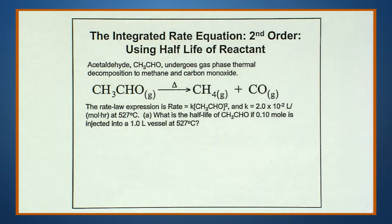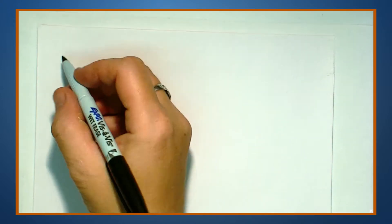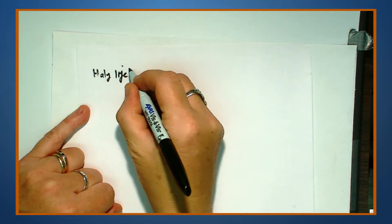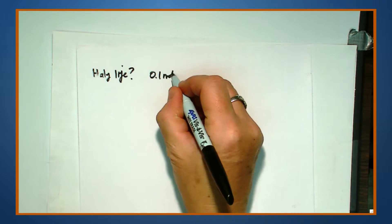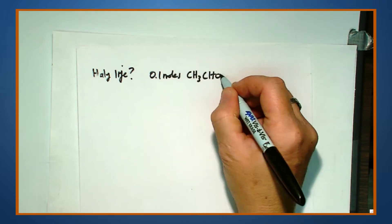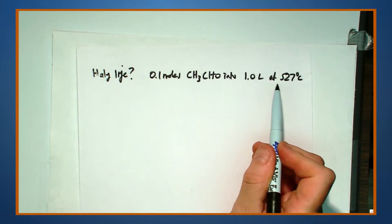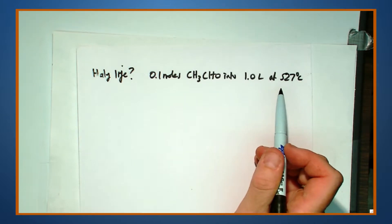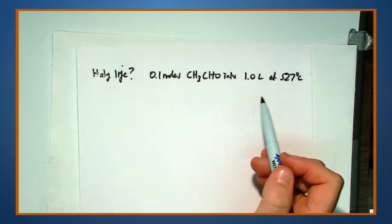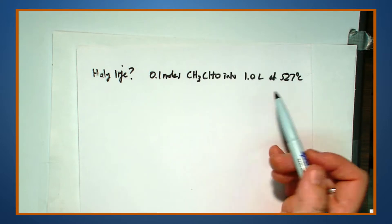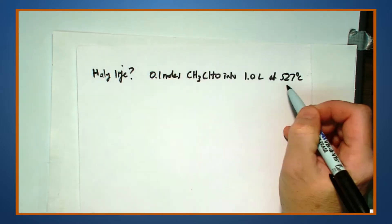Let's go back to the question. First, it wants the half-life. We're told there are 0.1 moles of CH₃CHO in 1 liter at 527°C. The question notes that everything is at the same temperature throughout, because — as you'll learn — the Arrhenius equation shows how the rate constant changes with temperature. We're keeping temperature constant so k stays the same.